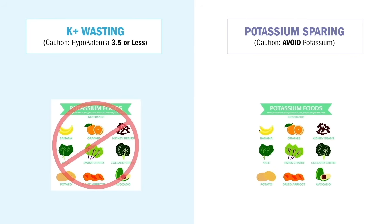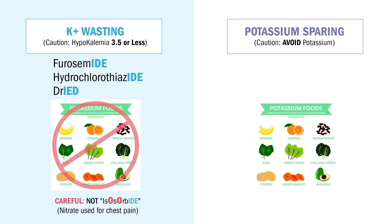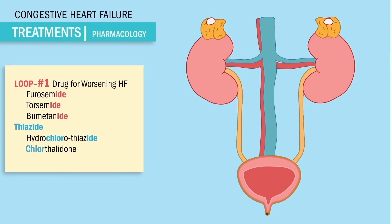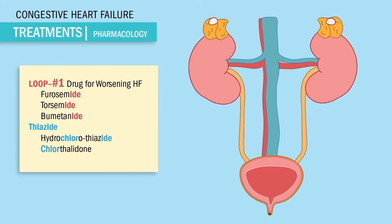Potassium wasting diuretics end in '-ide', like furosemide or hydrochlorothiazide — both rhyme with 'dry'. Be careful: isosorbide is a nitrate, not a diuretic. The O's in isosorbide make it a vasodilator similar to nitro. Loop diuretics like furosemide and torsemide are the first drugs used in acute or worsening heart failure.